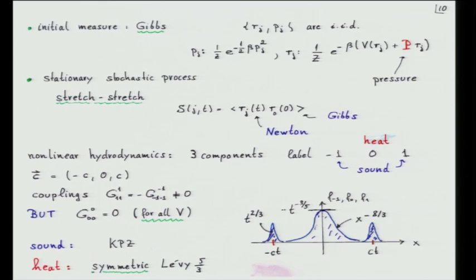If I apply this theory, the expectation is that the two sound modes, because they have nonzero leading coefficients, should be KPZ and broadened like t to the 2/3. In the middle — the heat mode — you will see the Levy distribution. But here there's an extra feature: you have sound modes from both right and left, which kills the asymmetry. So the heat mode is symmetric, and it's the Levy 5/3 — its Fourier transform is simply e to the minus k to the 5/3.